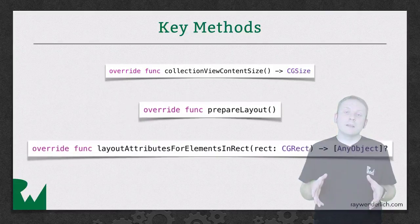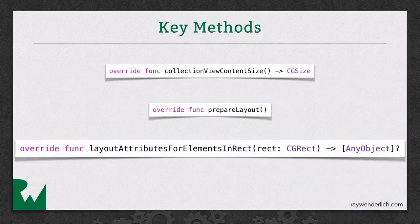The third and final method, layoutAttributesForElementsInRect, returns all the layout attributes for any views within the collection view whose frames intersect with the given rectangle. This rectangle usually represents the current visible area on screen.